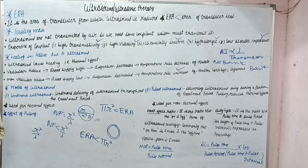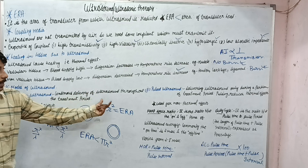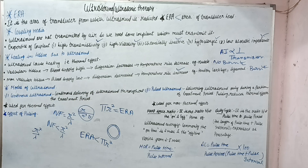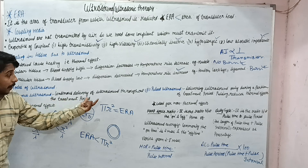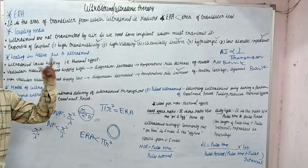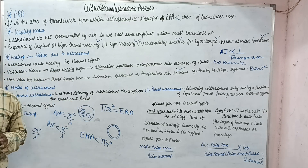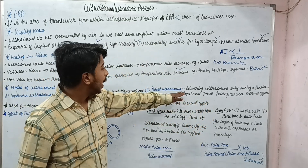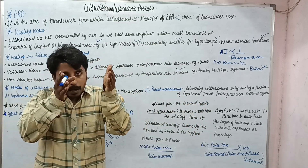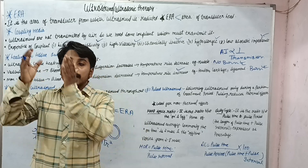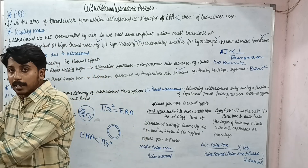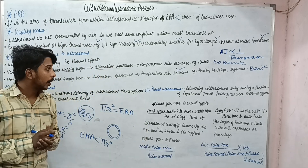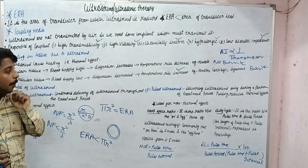Next is the mode of ultrasound. First is continuous ultrasound — continuous delivery of ultrasound throughout the time period, where the wave comes continuously. Second is pulsed ultrasound, where the wave comes for some time, then stops, then comes again, then stops. That is the pulsed mode.